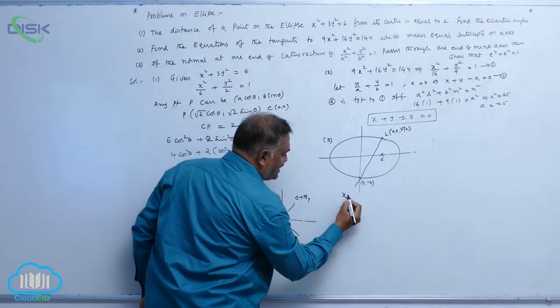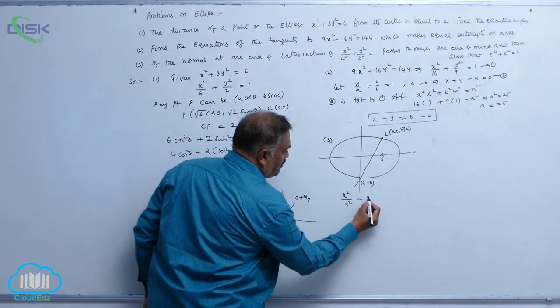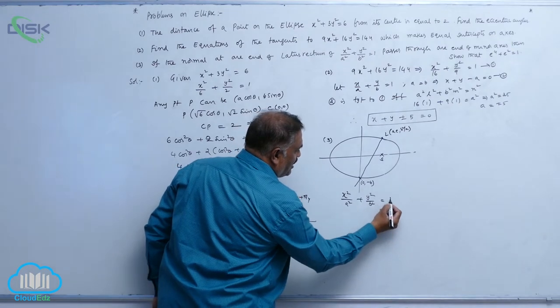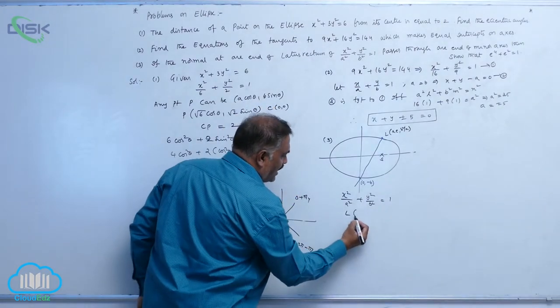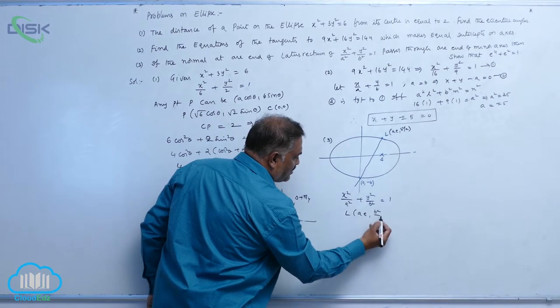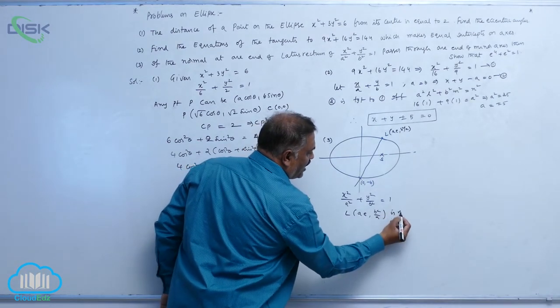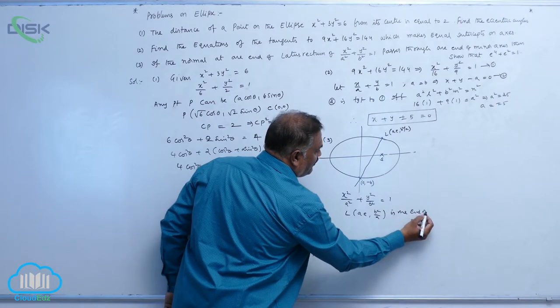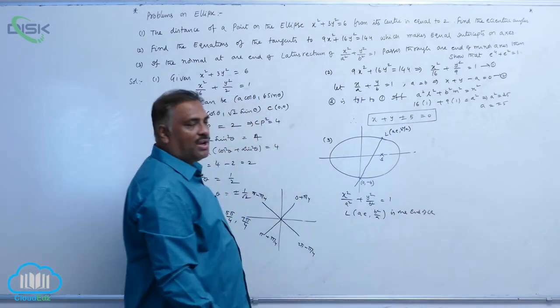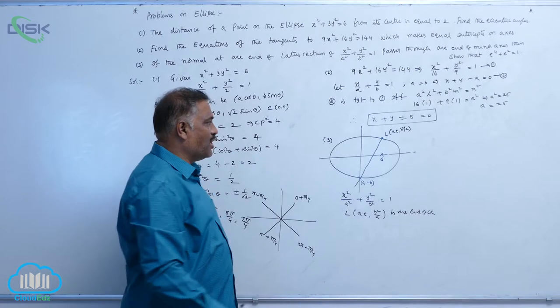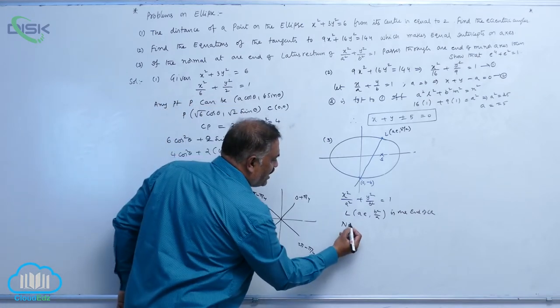First of all, ellipse equation is x square by a square, y square by b square equal to 1. L, ae comma b square by a, is one end of lattice rectum. You require normal equation at this point. So normal at L.